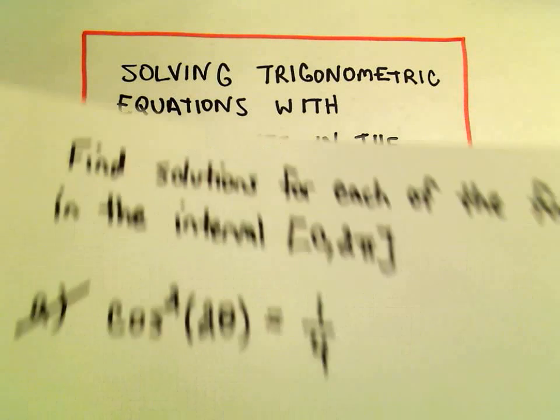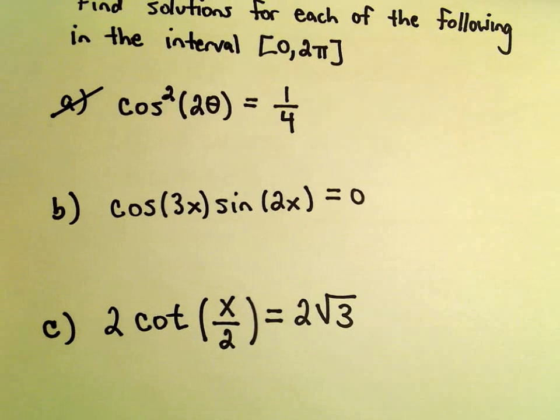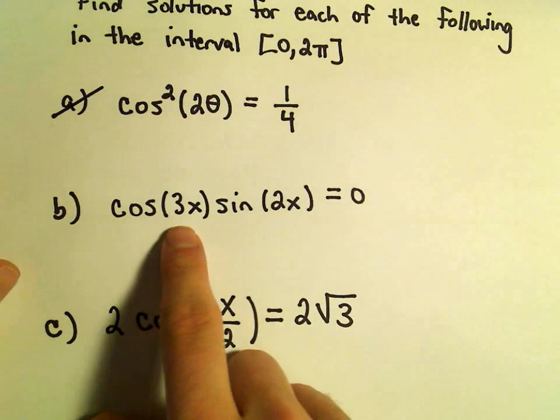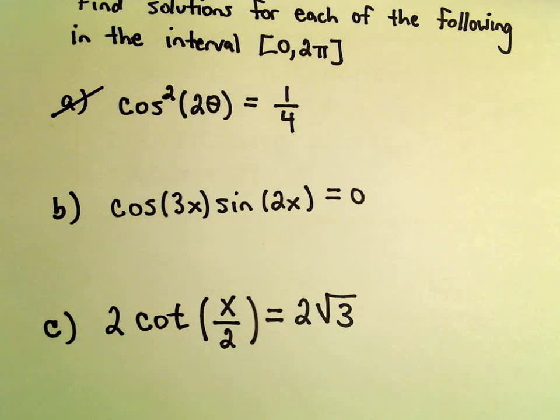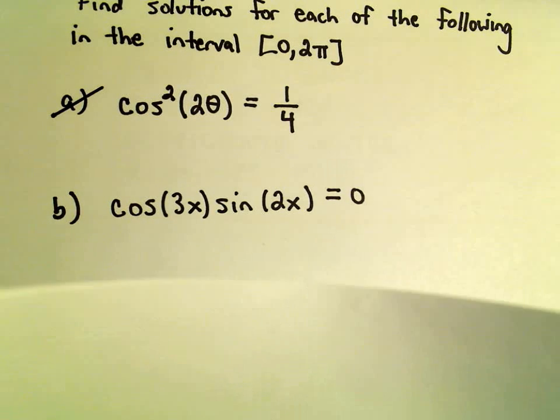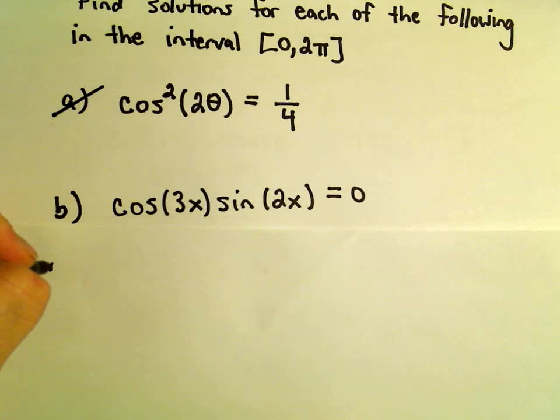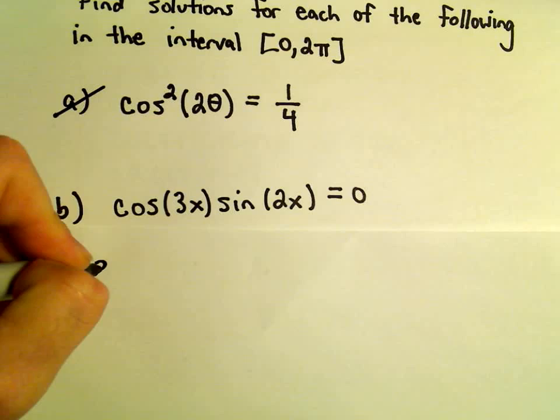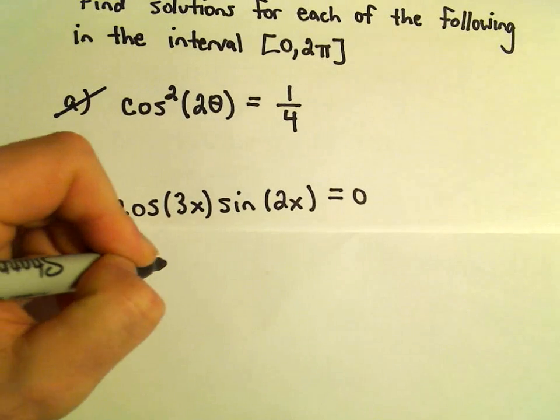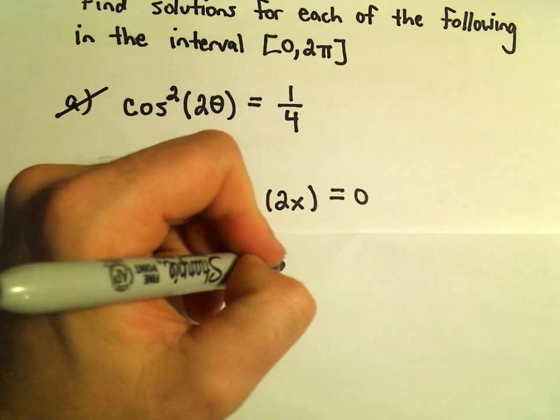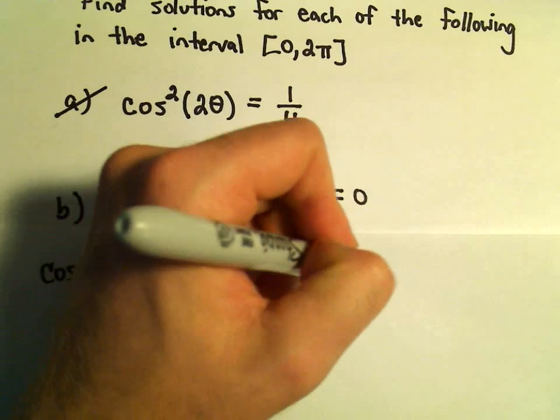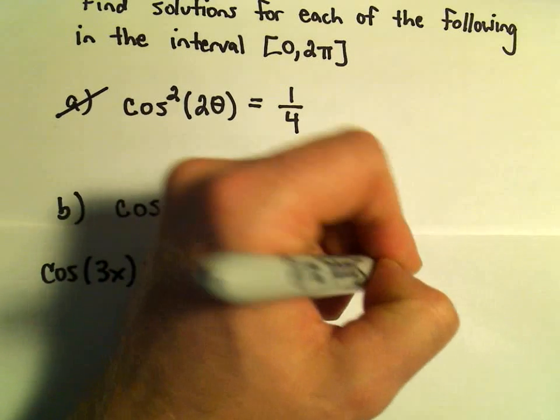Alright, so another example of solving a trig equation with coefficients in the argument. So here we've got cosine of 3x times sine of 2x equals 0. Well, this is already factored and we've got 0 on the right side, so simply we just need to find solutions to where cosine of 3x equals 0 and also where sine of 2x equals 0.